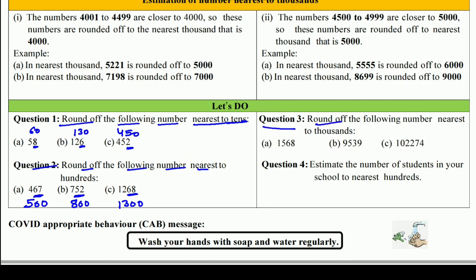Q3: Round off the following numbers nearest to thousands. Thousands के लिए last के 3 digits देखने हैं। अगर 500 या 500 से ज़्यादा हैं, तो higher वाले 1000 पर, वरना lower वाले 1000 पर। (a) 1,568 — 568 है, 500 से ज़्यादा, तो 2000. (b) 9,539 — 539 है, 500 से ज़्यादा, तो 10,000. (c) 12,274 — 274 है, 500 से कम, तो 12,000.